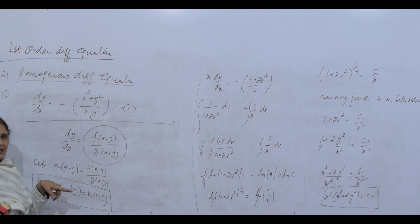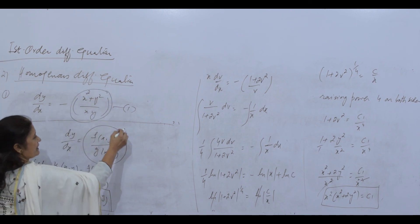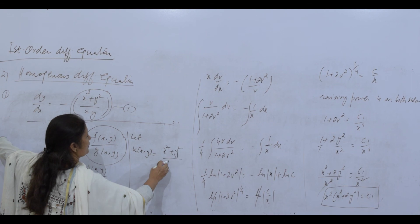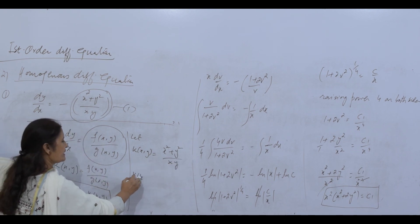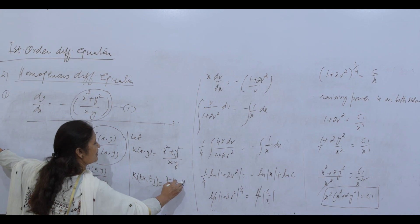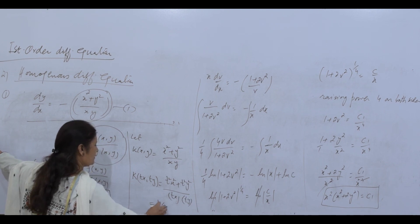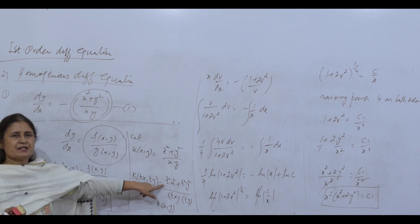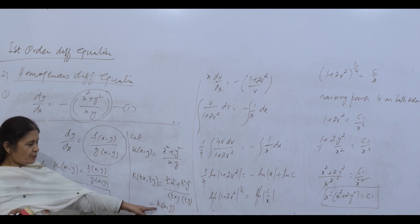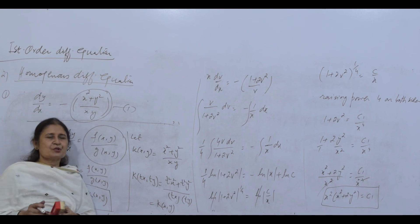For example, let k(x,y) = (x² + y²)/(xy). Replacing x by tx and y by ty: k(tx, ty) = (t²x² + t²y²)/(tx · ty) = t²(x² + y²)/(t²xy). The t² cancels from numerator and denominator, giving k(x,y) back. So this differential equation is homogeneous — put y = vx and solve.